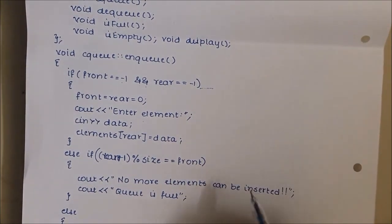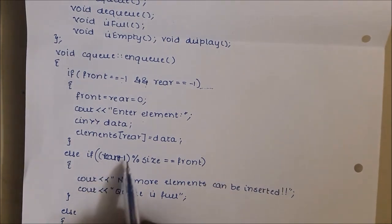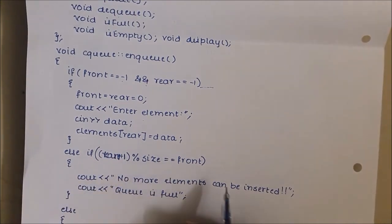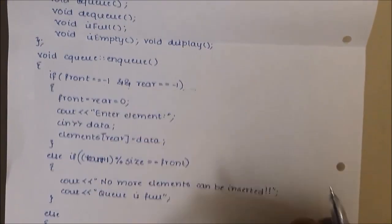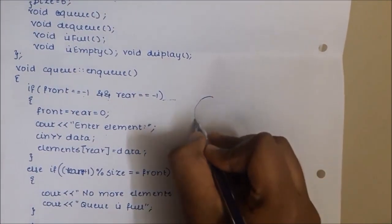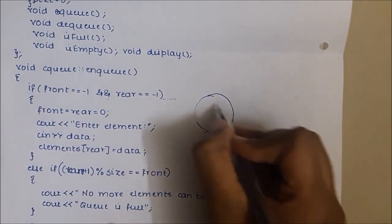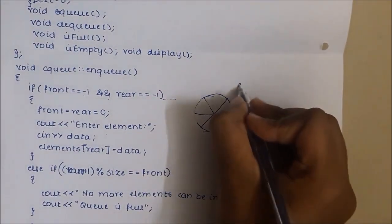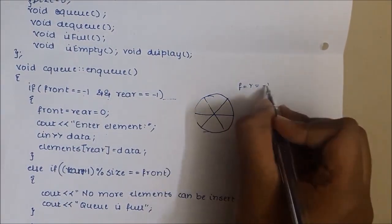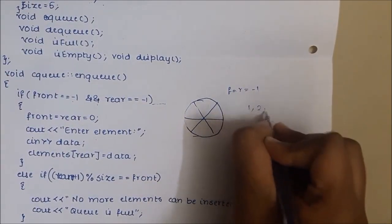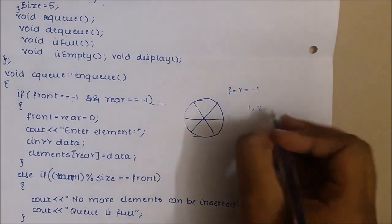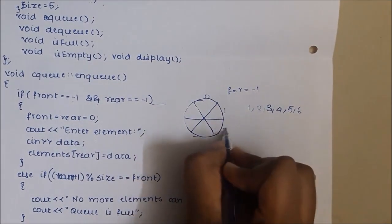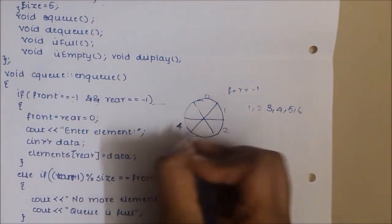If the queue is full, we cannot insert any more elements. The condition to check if the queue is full is: if (rear + 1) % size == front. For example, if the size of the queue is 6 and we have 6 elements — 1, 2, 3, 4, 5, and 6 — with indices 0 through 5, initially front and rear point to minus 1.